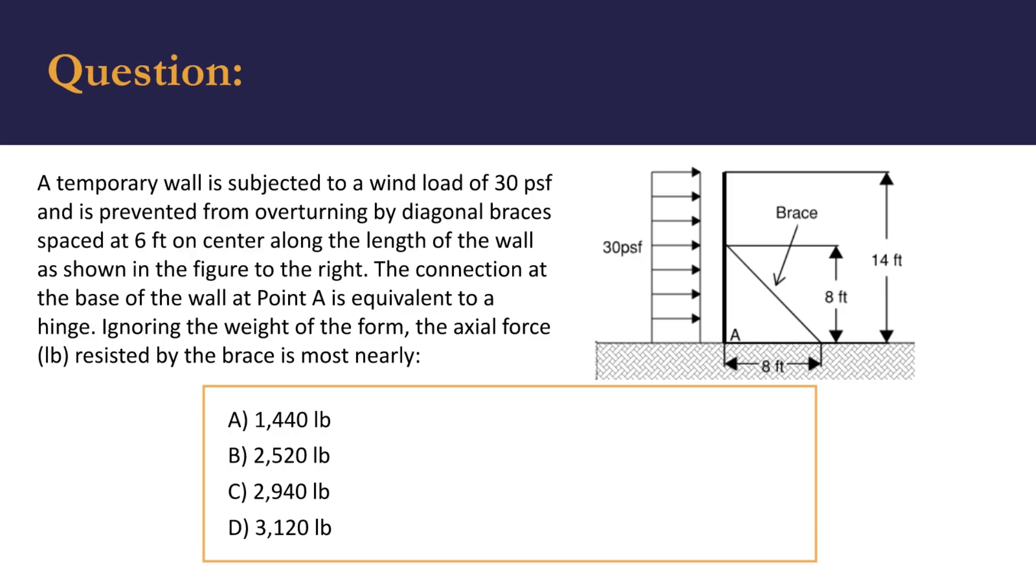Here we're shown a temporary wall that is subjected to a wind load of 30 pounds per square foot, and it's prevented from overturning by diagonal braces that are spaced at 6 feet on center along the length of the wall. And this is shown in the figure to the right. So the connection at the base of the wall at point A is equivalent to a hinge. So this is a hinge connection if you go back to your statics class.